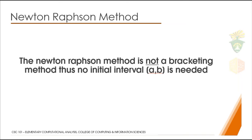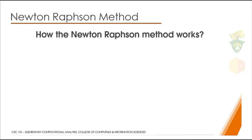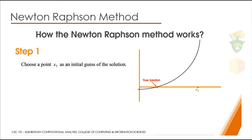So how does this work? Instead of needing an interval, the Newton-Raphson method just needs an initial guess x₁. So just one point is needed. This point should be near or close enough to the true solution. If you want to implement the Newton-Raphson method, the x₁ is dependent on the user, whichever x₁ you choose.